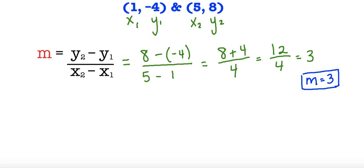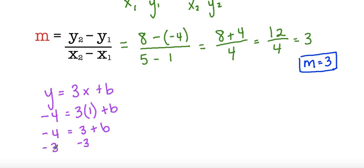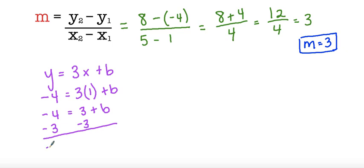Now that we have our slope we can go back and find our y-intercept. So y equals 3x plus b because we don't know what our y-intercept is. We can just pick a coordinate — I'll pick the first coordinate. So our y value is negative 4 and our x value is 1. So negative 4 is equal to 3 times 1, which is our x value, plus b. So negative 4 is equal to 3 plus b. And if we subtract by 3, we have b is equal to negative 7.